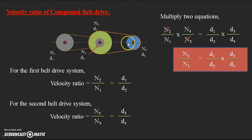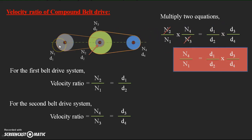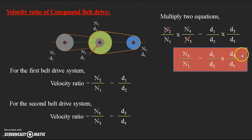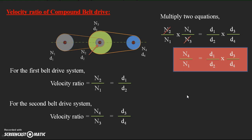When belt drive systems keep increasing, the velocity ratio — speed of the final follower to the initial driver — equals D1 × D3 × D5 × D7... (odd suffix diameters) divided by D2 × D4 × D6... (even suffix diameters). That is how we find the velocity ratio for the compound belt drive system.